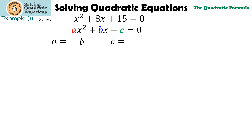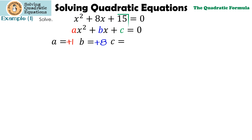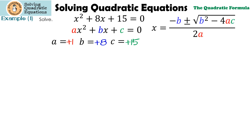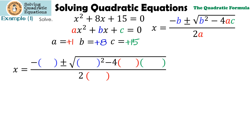Some of you can see a, b, and c right away, but let me show you how to find it. a is 1, b is 8, and c is 15. Now we're going to substitute that into the formula, so all of the a's are 1, the b's are 8, and then finally the only c is 15.